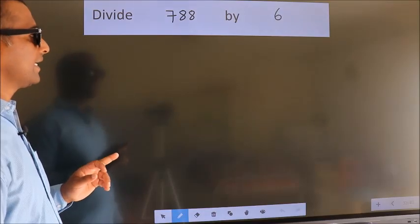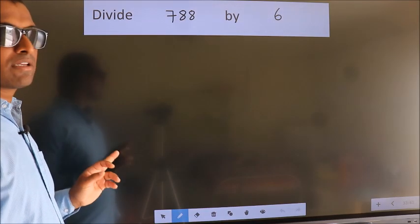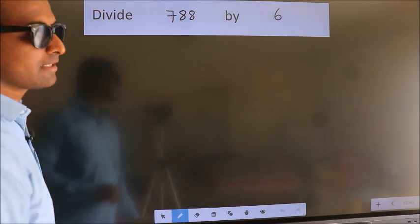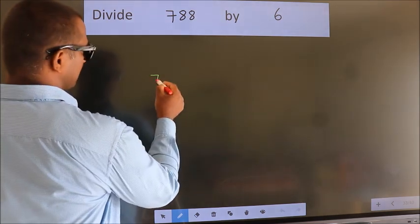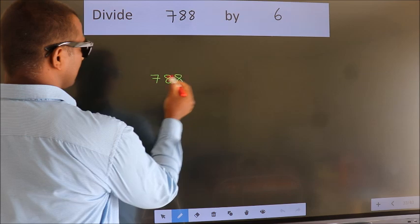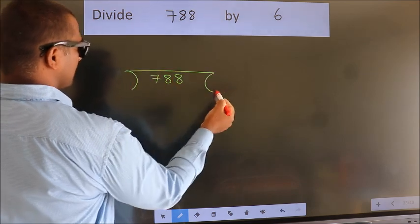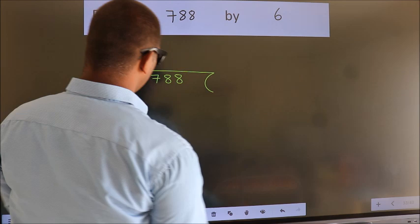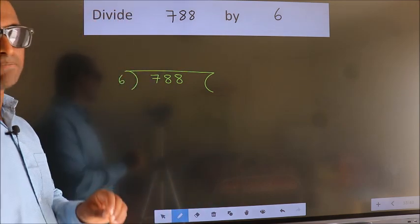Divide 788 by 6. To do this division, we should frame it in this way. 788 here, 6 here. This is your step 1.